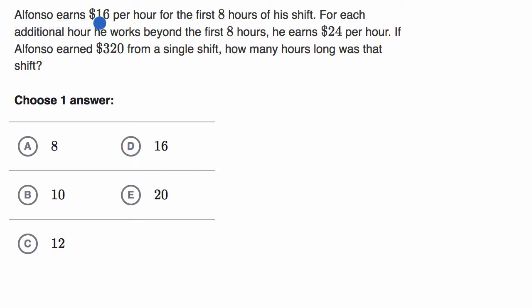Alfonso earns $16 per hour for the first eight hours of his shift. For each additional hour he works beyond the first eight hours, he earns $24 per hour. If Alfonso earned $320 from a single shift, how many hours long was that shift? Pause this video, see if you can figure this out.